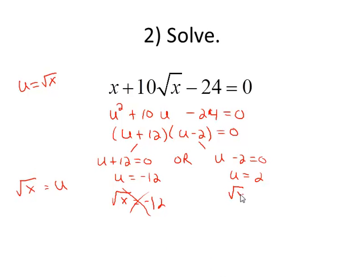For the other one, if I have the square root of x equals 2, I can square both sides to get rid of the square root. And I have x equals 4 as my only solution.